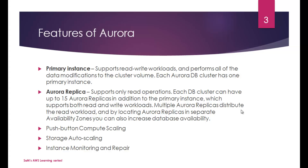Here are some features of Aurora. When you create an Aurora instance, it creates a primary instance and an Aurora replica. The primary instance supports read and write workloads and performs all of the data modifications to the cluster volume. Each Aurora DB cluster has one primary instance. Aurora replicas support only read operations — essentially a replica of your primary instance. Each DB cluster can have up to 15 Aurora replicas in addition to the primary instance. That's an important point to remember: 15 Aurora replicas are supported.